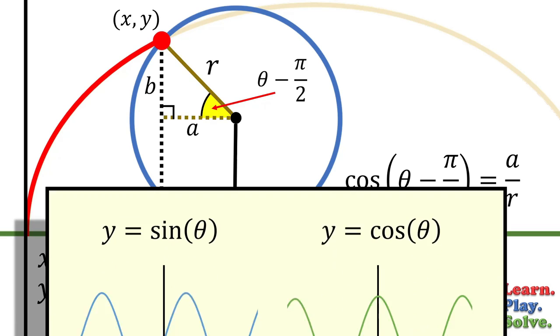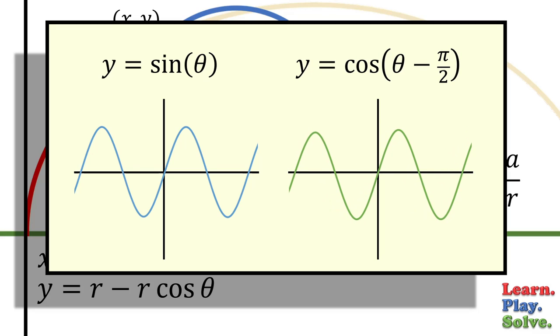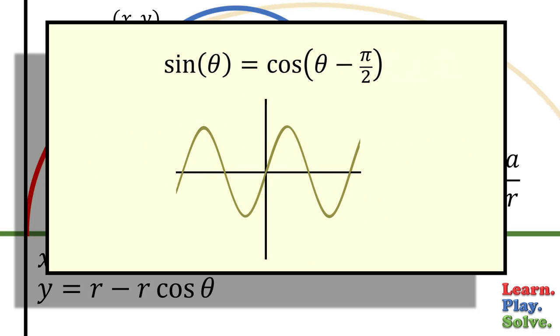Again, we can simplify this. If we change the cosine function by subtracting pi over 2, it will shift it like this. This is identical to the sine function as it is. So the sine of theta is equal to cosine of theta minus pi over 2.